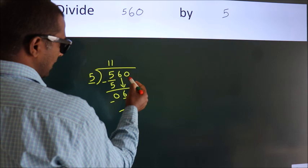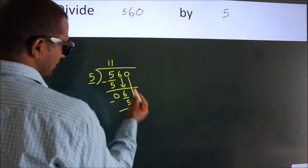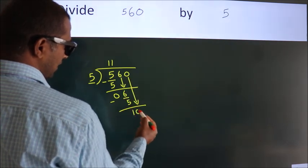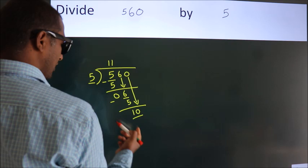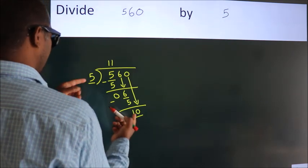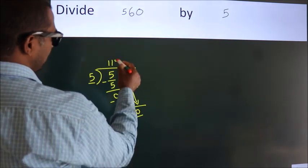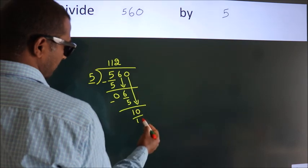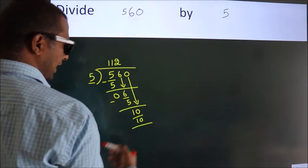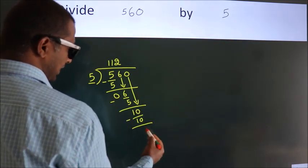After this, bring down the beside number. So 0 down. So 10. When do we get 10? In 5 table. 5 twos, 10. Now we subtract. We get 0.